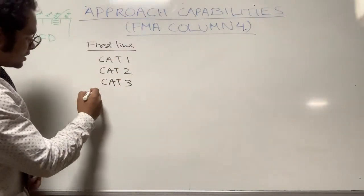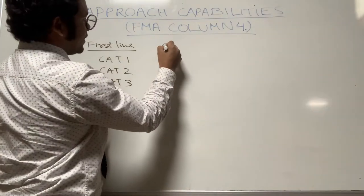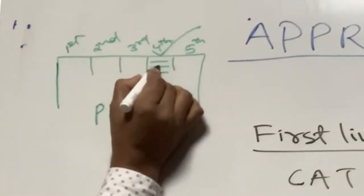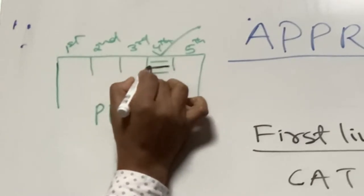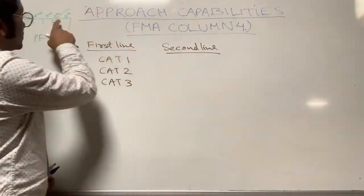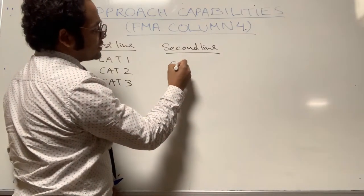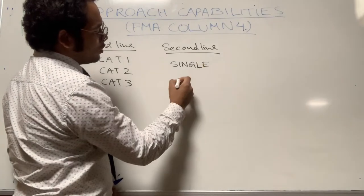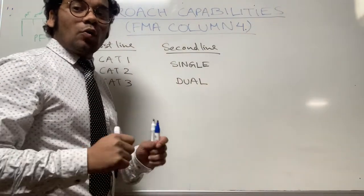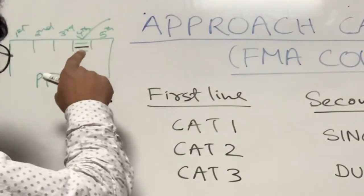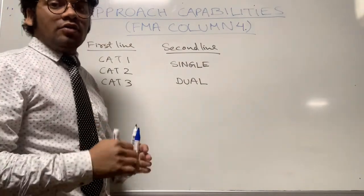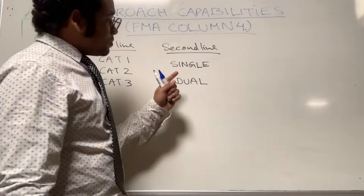Next we'll discuss about the second line. What appears on the second line? The FMA which we can get is SINGLE or DUAL. Note that SINGLE and DUAL these FMAs also appear in white color in the second line position.